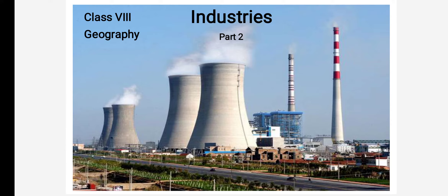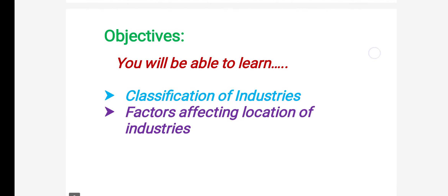In that classification of industries, we discussed about raw materials. Now at the end of today's class, you will be able to learn about the remaining classification — based on size, based on ownership — and also factors affecting the location of industries. So let's go ahead.